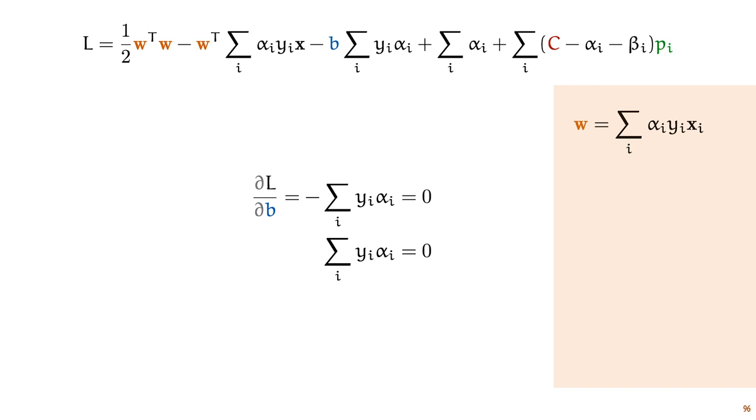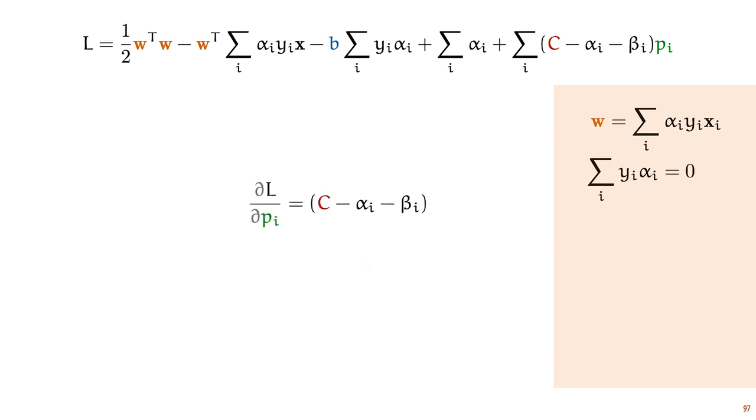And setting this derivative equal to zero, we get an expression for what w is at the optimum in terms of alpha, y, and x. The next parameter is b. This only occurs in one term, and taking its derivative and setting this equal to zero, we find a simple constraint. That at the optimum, the sum of all alpha values multiplied by their corresponding y's should be zero.